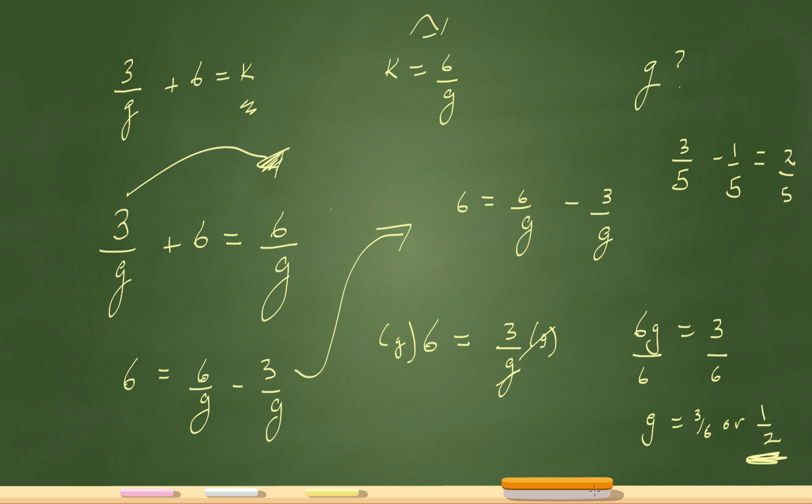So that's my answer, 1 half. That's all. All I did was replace that k right there with 6 over g, and I combined my like terms and slowly just got to my final answer of g. So from here we went there, from here we went here, and from here we went here.